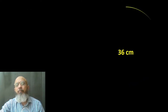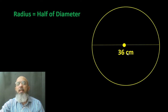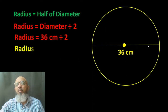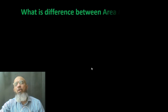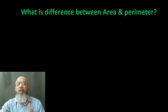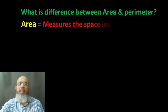Similarly, if the diameter is given as 36 centimeters and we want to find the radius, we divide the diameter by two and get 18 centimeters. Now, what is the difference between area and perimeter? We are going to find the area and perimeter — or circumference — of a circle.